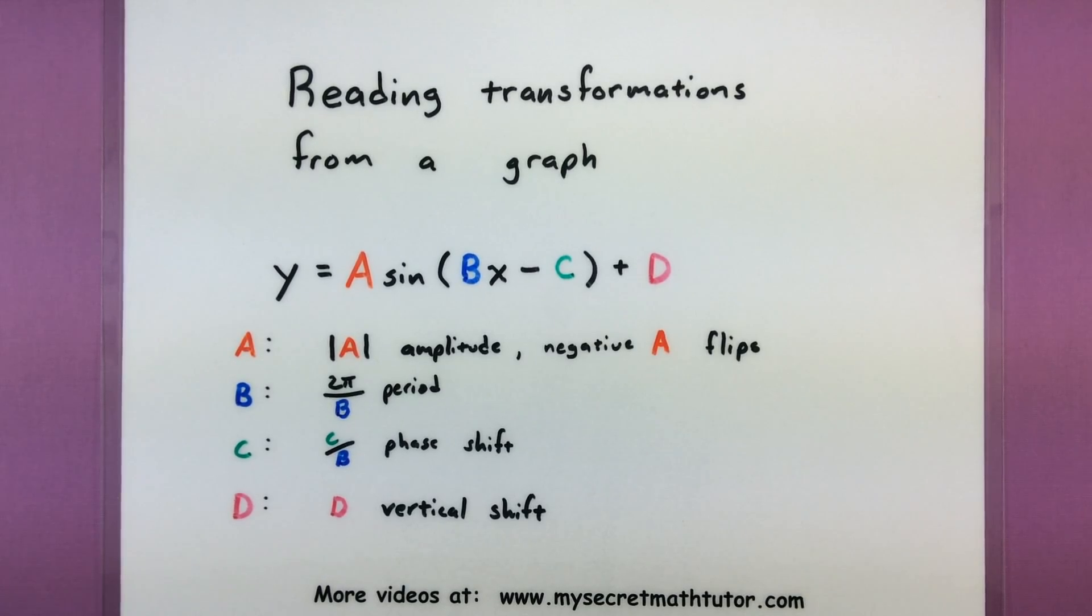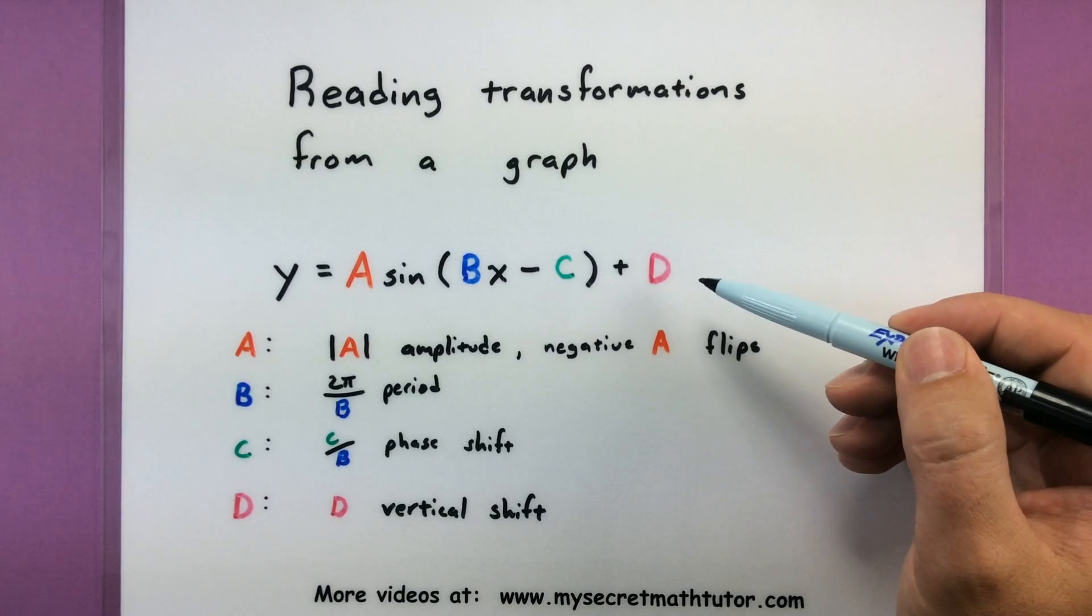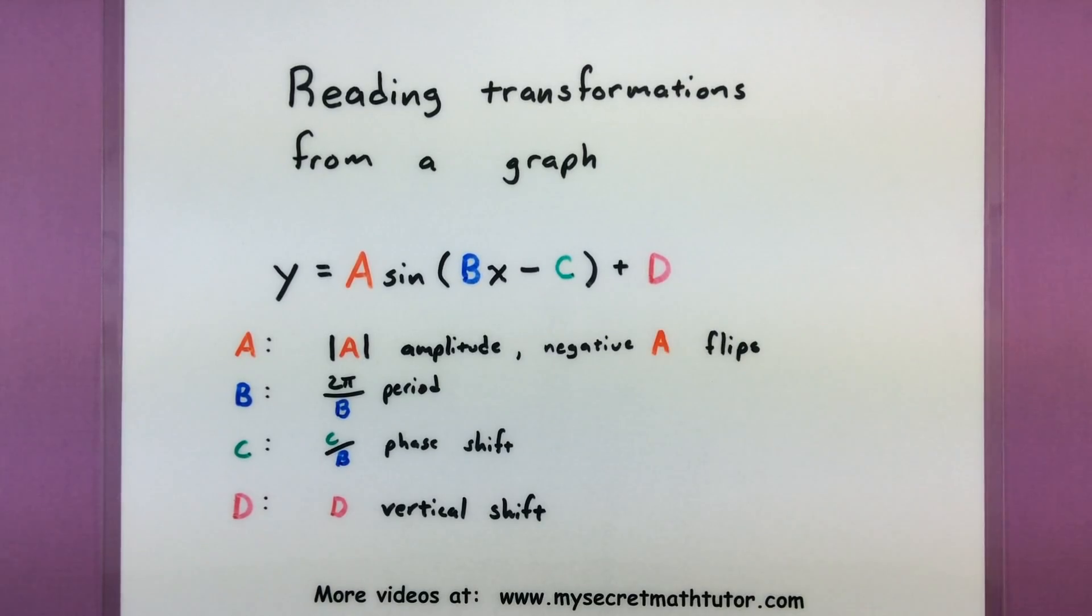Also another quick word of warning, as long as we're working backwards starting with the graph we may actually be able to come up with more than one equation that actually represents it. So watch this in my examples how we'll actually build more than one equation and they'll both be perfectly fine. Alright let's go ahead and move on.